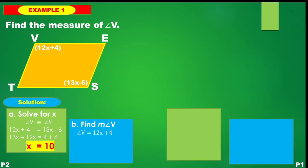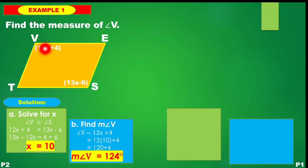To find angle V, we have 12x + 4. Substituting x = 10: 12 times 10 plus 4, that gives 120 + 4, a total of 124 degrees. That is the measure of angle V.